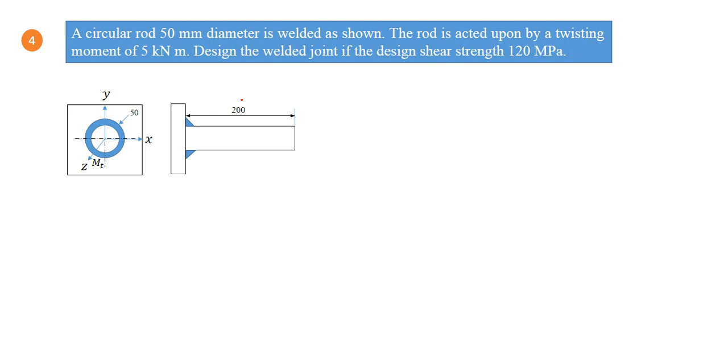Next problem is of circular rod 50 mm diameter welded as shown. The rod is acted upon by twisting moment of 5 kN·m. So design the welded joint of design strength is this. Here it is slightly different because we have to find out value of J for thin lamina, thin ring, or thin circular ring. A brief analysis is given, though it is not required for you to have this analysis in the problem. You can directly make use of the expressions for I and J for this type of weld geometry.